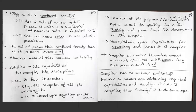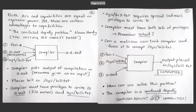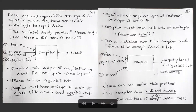The attacker misused this ambient authority by getting the program to use the wrong authority in the wrong place. A key takeaway from this course: whenever you can associate a problem with the confused deputy problem, a light bulb should go on — and the solution is to use capabilities. Confused deputy means capabilities is the answer. We'll see how capabilities solve this, and we'll see the confused deputy problem again in web security with cross-site request forgery.